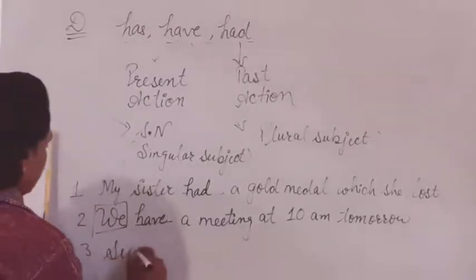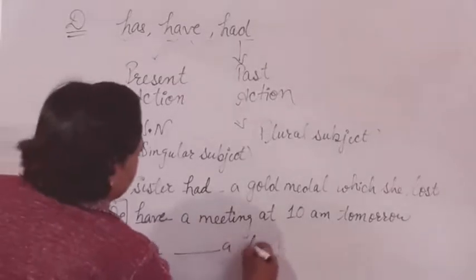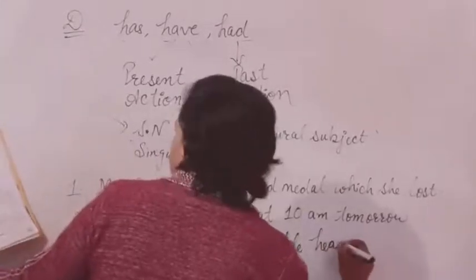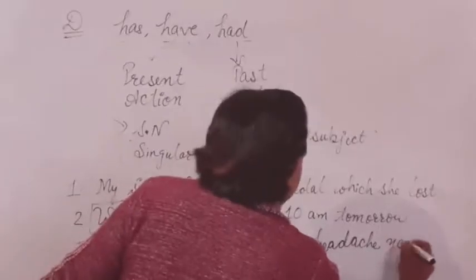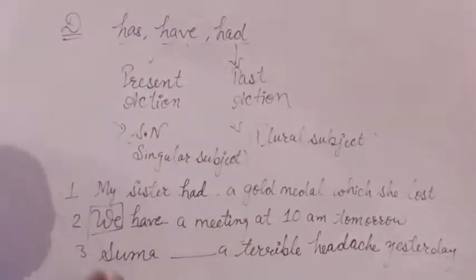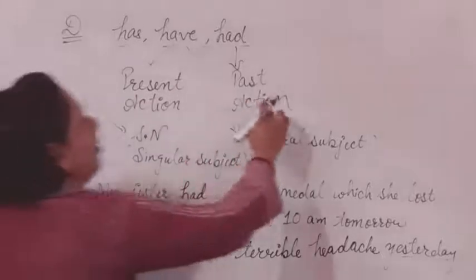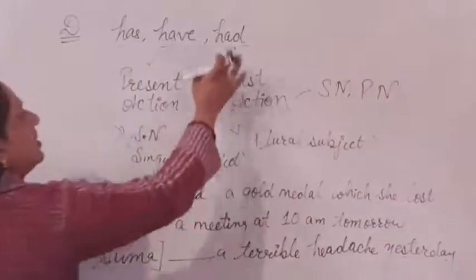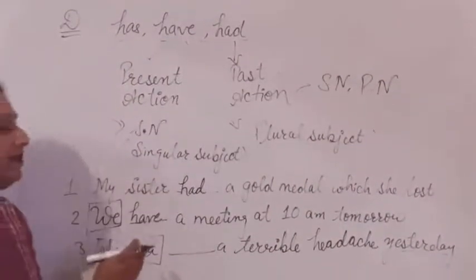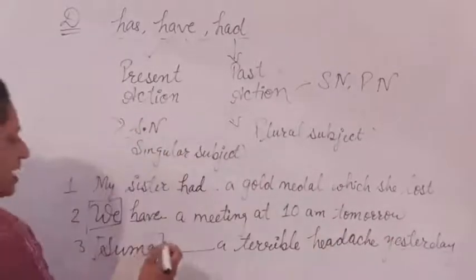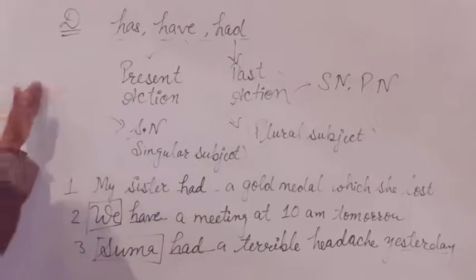Next: Summa blank a terrible headache yesterday. This sentence is about an action that happened in the past. For past actions, with all subjects — singular or plural — we use had. So the answer is: Summa had a terrible headache yesterday. Like this, you will solve this exercise.